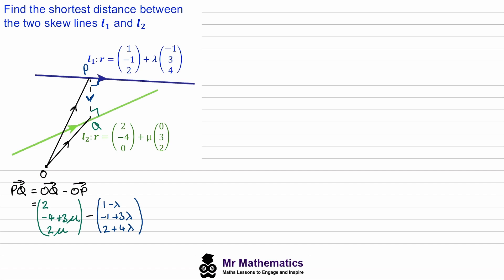To work out P to Q we need to expand out the bracket. The x-coordinate will be 2 minus 1 plus λ, the y-coordinate will have negative 4 plus 1 and then 3μ minus 3λ, and for the z-coordinate we'll have 2μ minus 2 minus 4λ. This will be the 3D vector for P to Q in its general form.